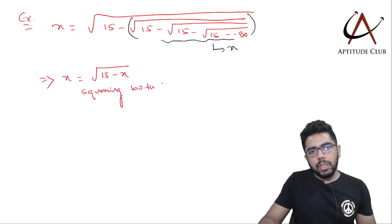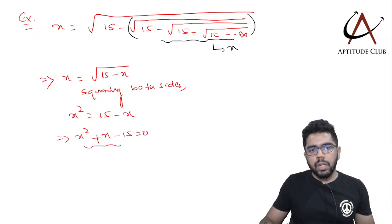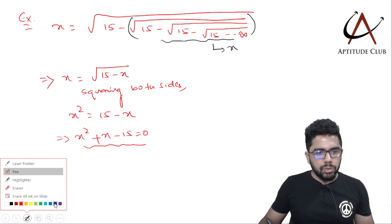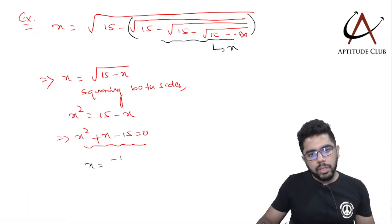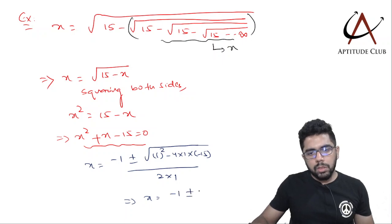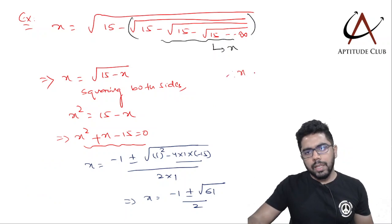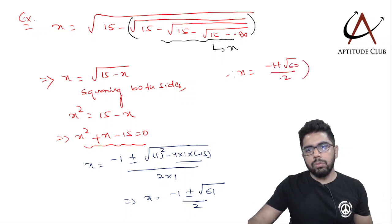Again, from a certain point the tail is x, so I substitute: x = √(15 − x). Squaring both sides: x² = 15 − x, giving x² + x − 15 = 0. Using the quadratic formula: x = (−1 ± √(1 + 60)) / 2 = (−1 ± √61) / 2. Taking the positive real number value: x = (−1 + √61) / 2.